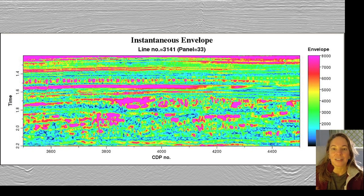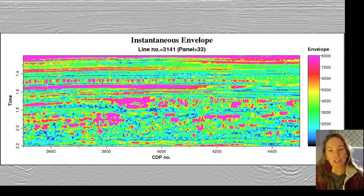Alright, so back to the data. This is the instantaneous envelope, or you can think about it as a reflection strength. It combines the original trace and the Hilbert transform trace to show us the total energy from both that real and imaginary part at each point. This could be really useful for identifying bright spots and also sequence boundaries.